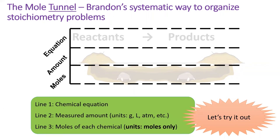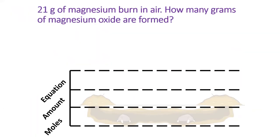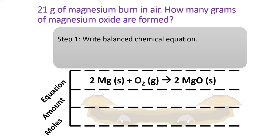Let's try it out. So 21 grams of magnesium burn in air. How many grams of magnesium oxide are formed?